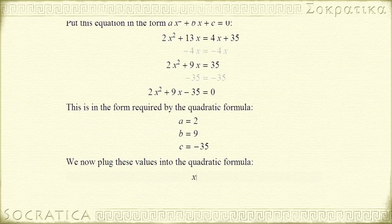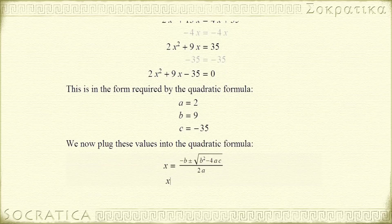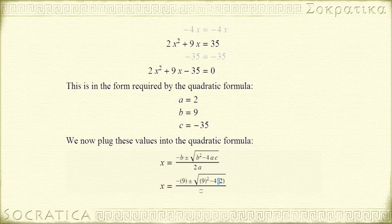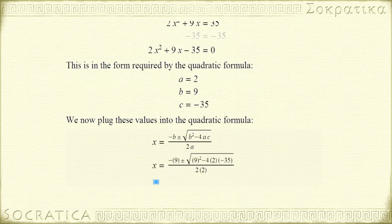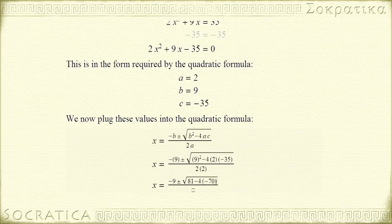Again, the quadratic formula says that x equals the opposite of b plus or minus the square root of b squared minus 4ac, all over 2a. Plugging in our values, we get x equals negative 9 plus or minus the square root of 9 squared minus 4 times 2 times negative 35, all over 2 times 2. We can simplify a bit and we get x equals negative 9 plus or minus the square root of 81 minus 4 times negative 70, because 2 times negative 35 is negative 70, all over 4.